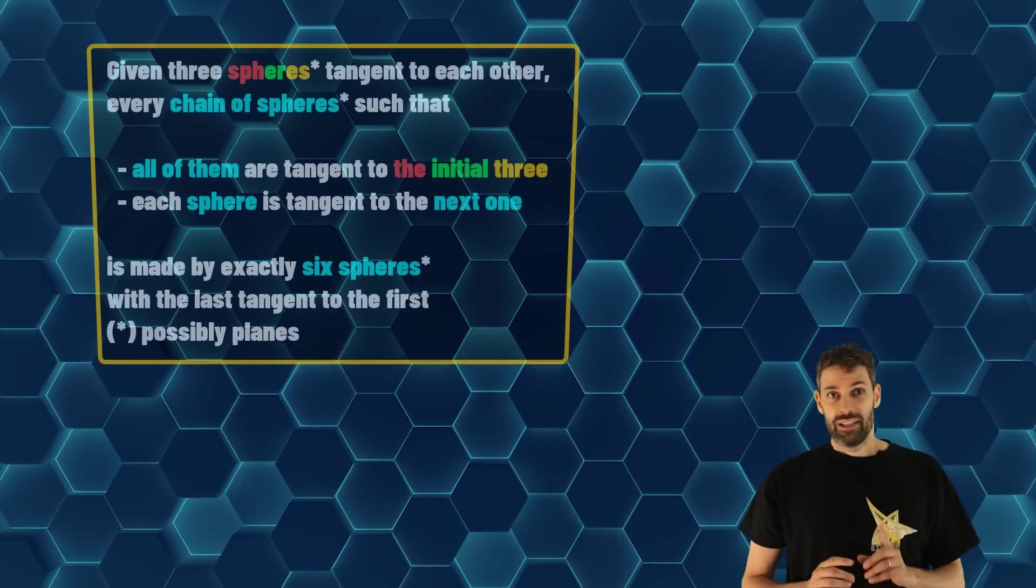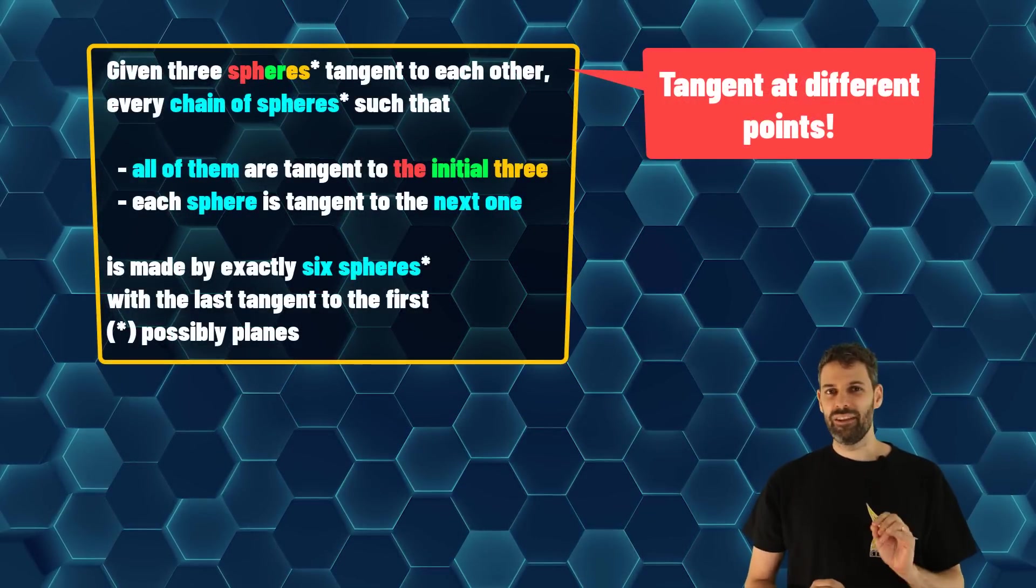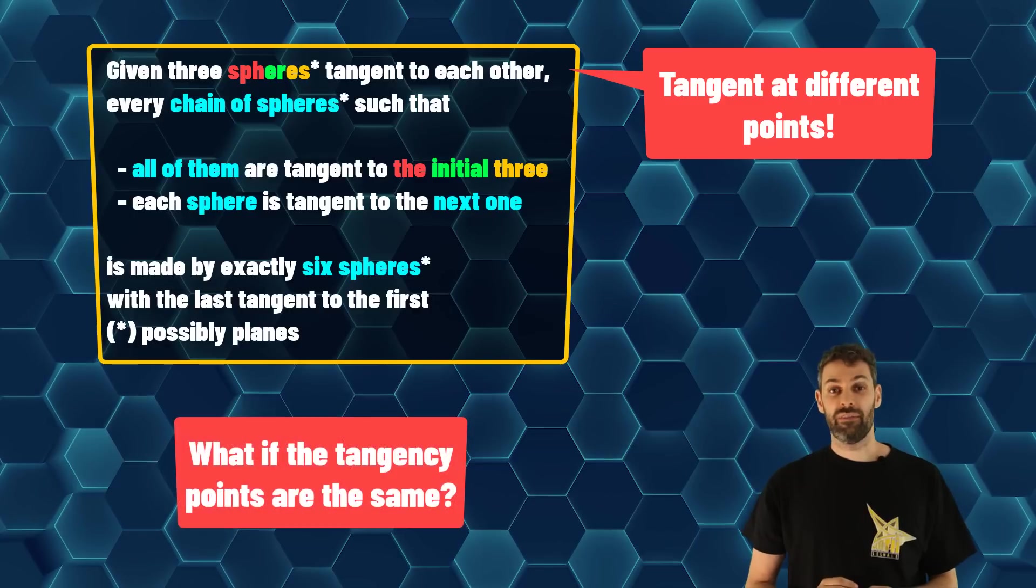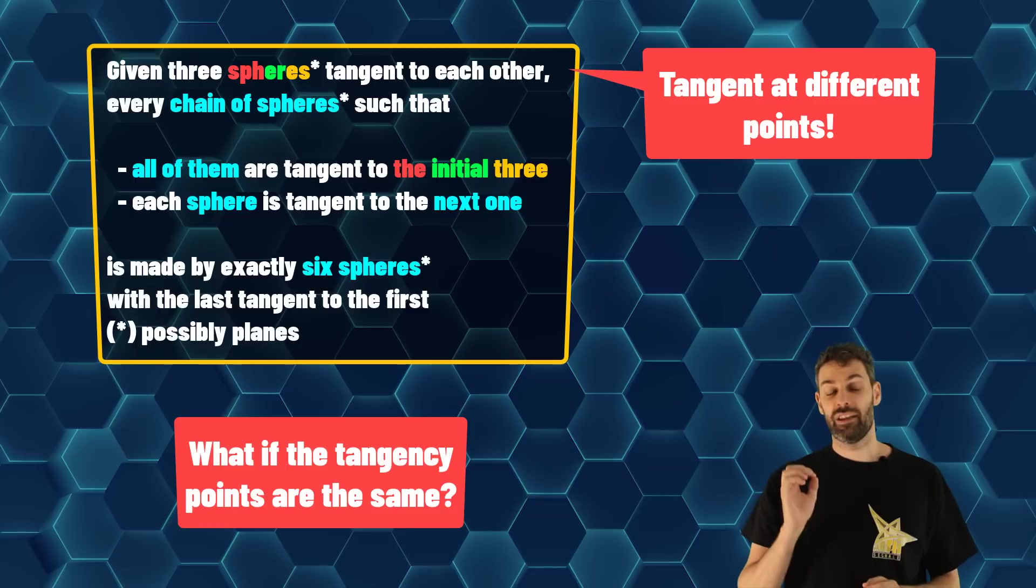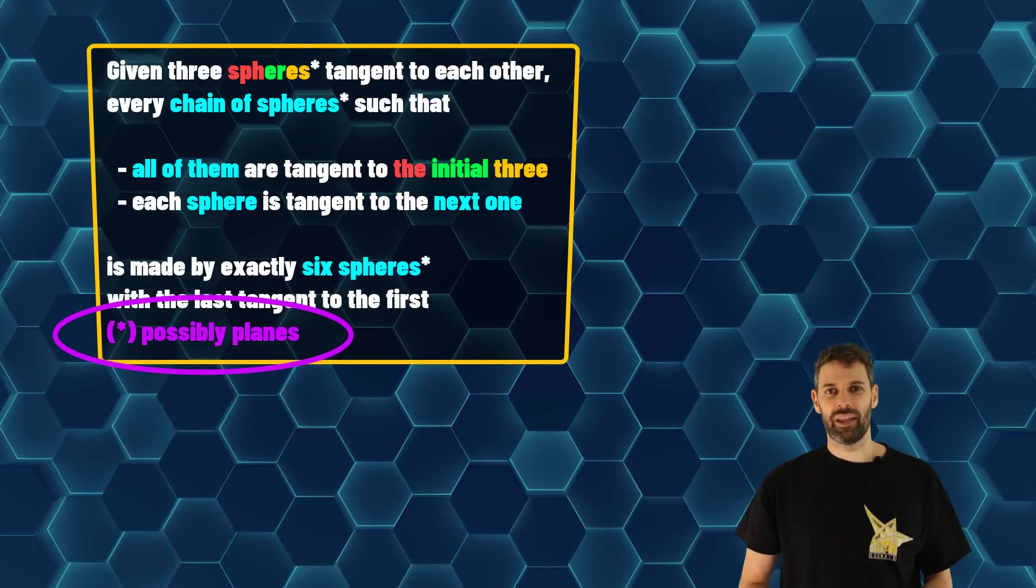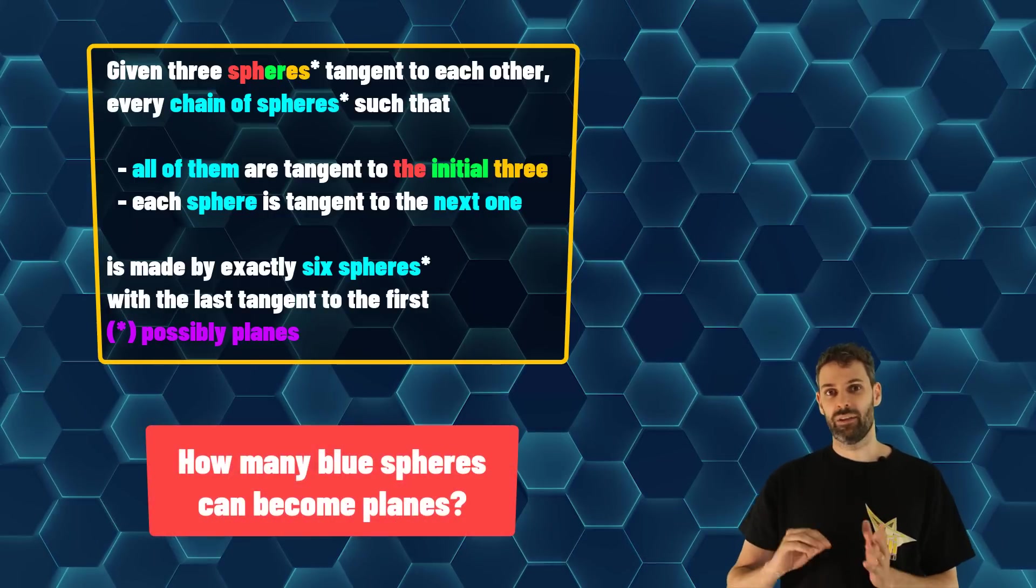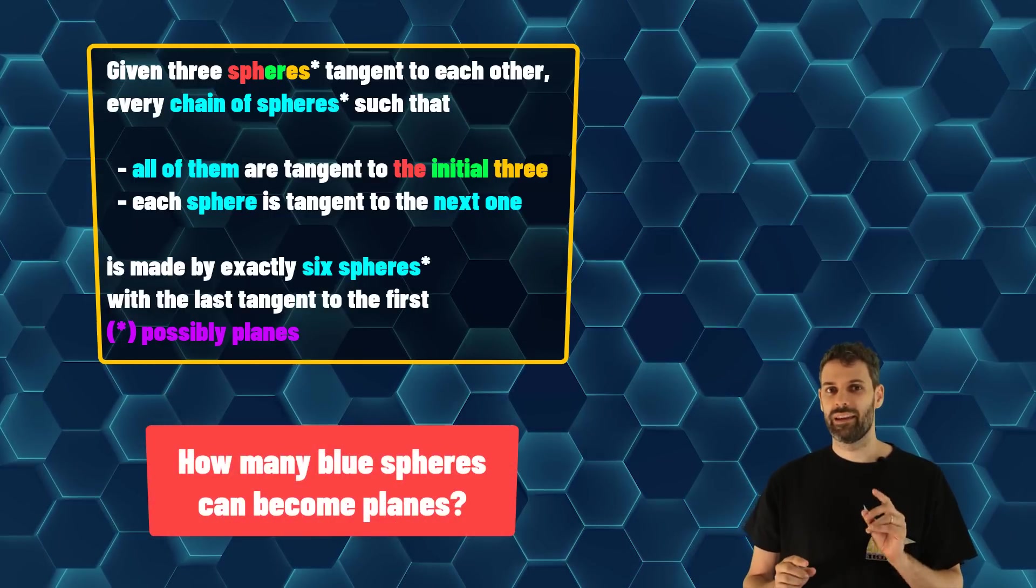If you like this problem, we have some challenges for you. First of all, we forgot a little note in the statement. Can you figure out what happens if the three initial spheres are tangent in the same point? And about the other note in the statement. Can you figure out how many spheres can degenerate into planes? And when is it possible?